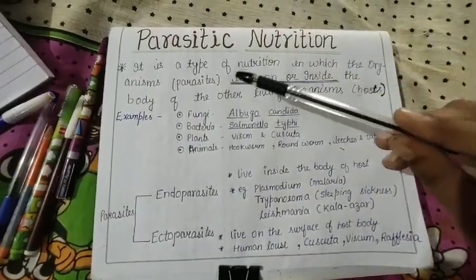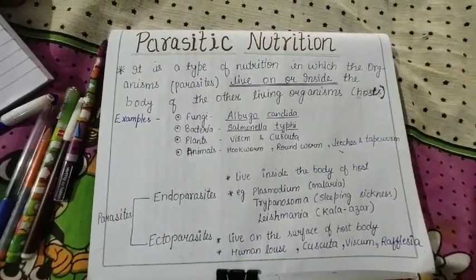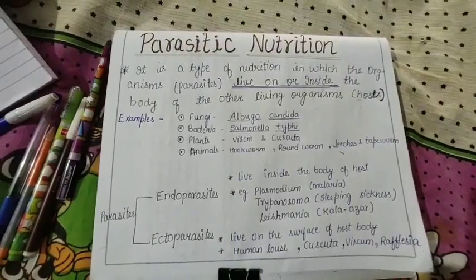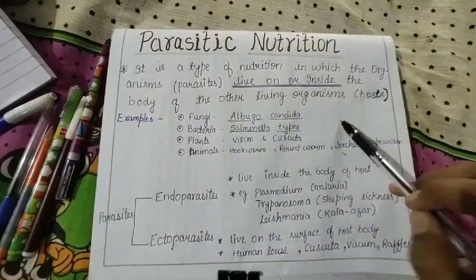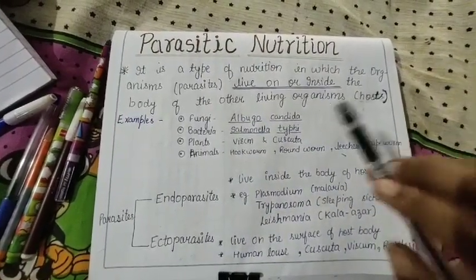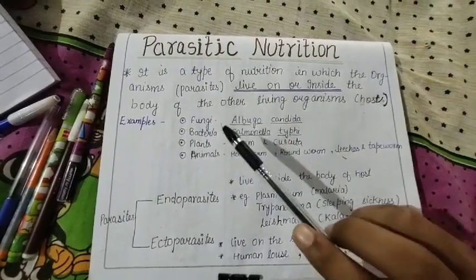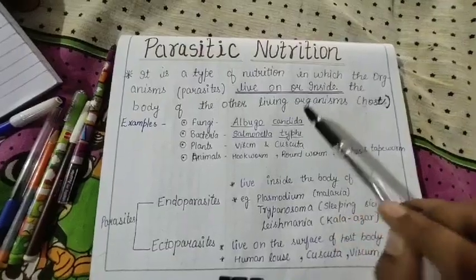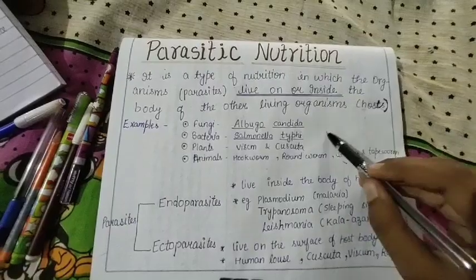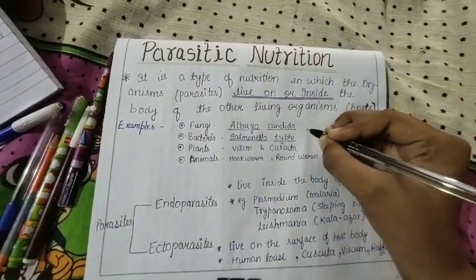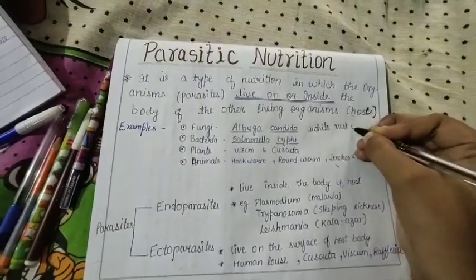The next type of heterotrophic nutrition is parasitic nutrition. In this, the organism lives on or inside the body of another living organism, known as the host. For example, the fungus Albugo candida causes white rust on the mustard plant.